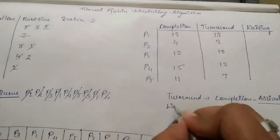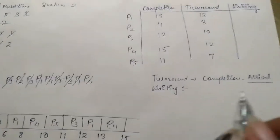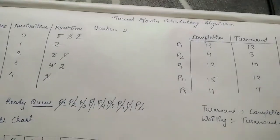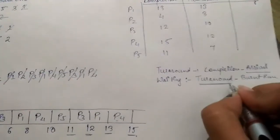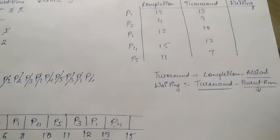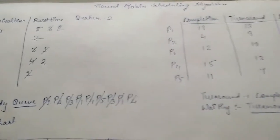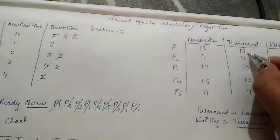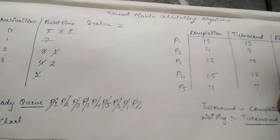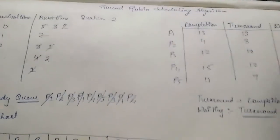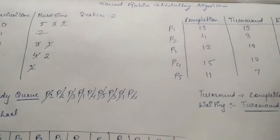Now for waiting time — how much time a process has to wait. The formula is: Waiting Time = Turnaround Time minus Burst Time. The turnaround time is the total time taken to complete, and burst time is the actual processing time needed. So for P1: 13 minus 5 equals 8. For P2: 3 minus 2 equals 1. For P3: 10 minus 3 equals 7. For P4: 12 minus 4 equals 8. For P5: 7 minus 1 equals 6.